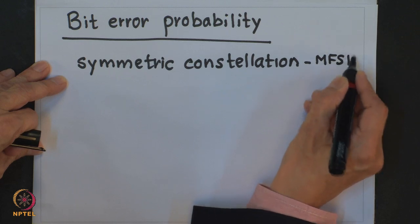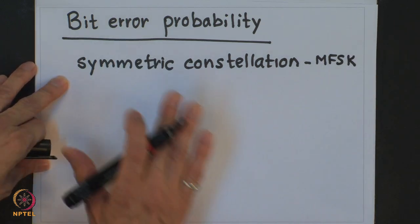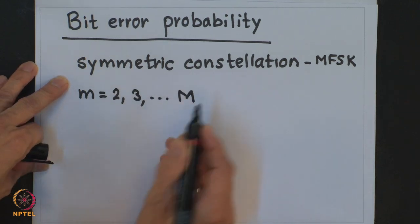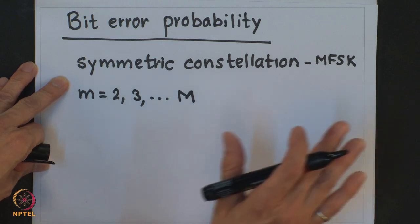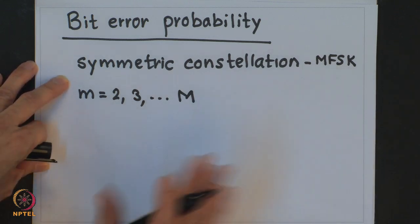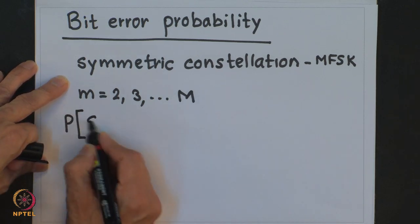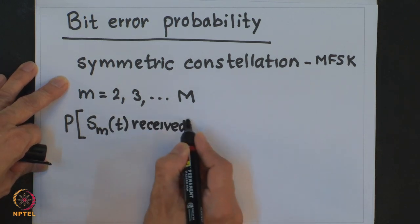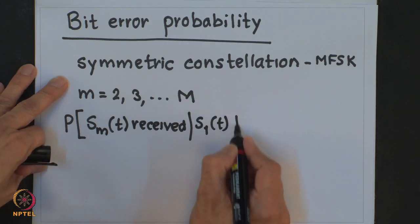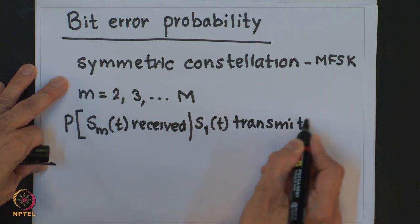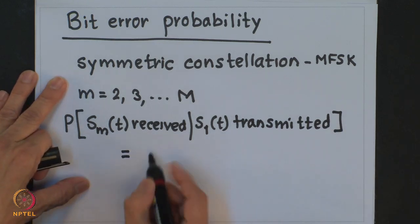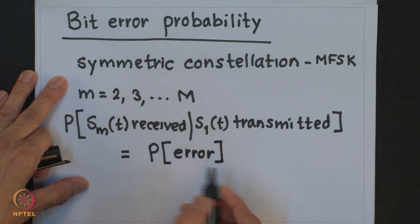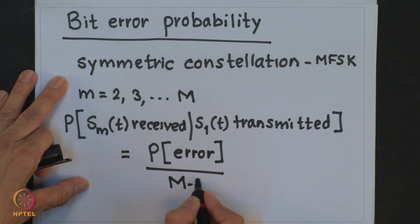M-ary FSK has a symmetric constellation, which implies that the probabilities of receiving any of the message signals S_2(t) through S_M(t) when S_1(t) is transmitted are equal. The probability of receiving any specific incorrect signal given S_1(t) equals the probability of symbol error divided by M−1.